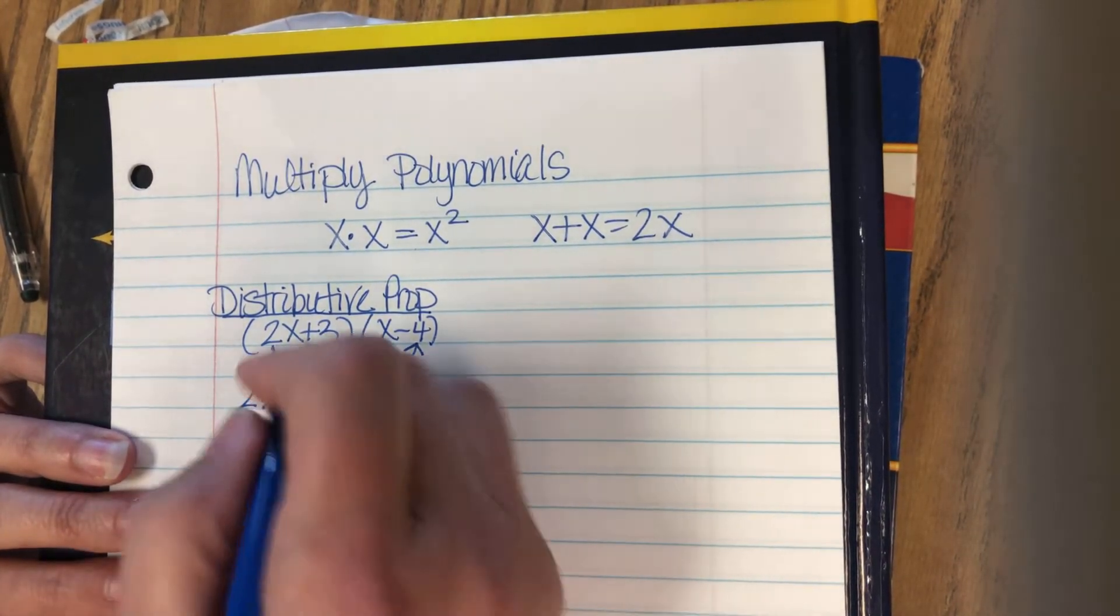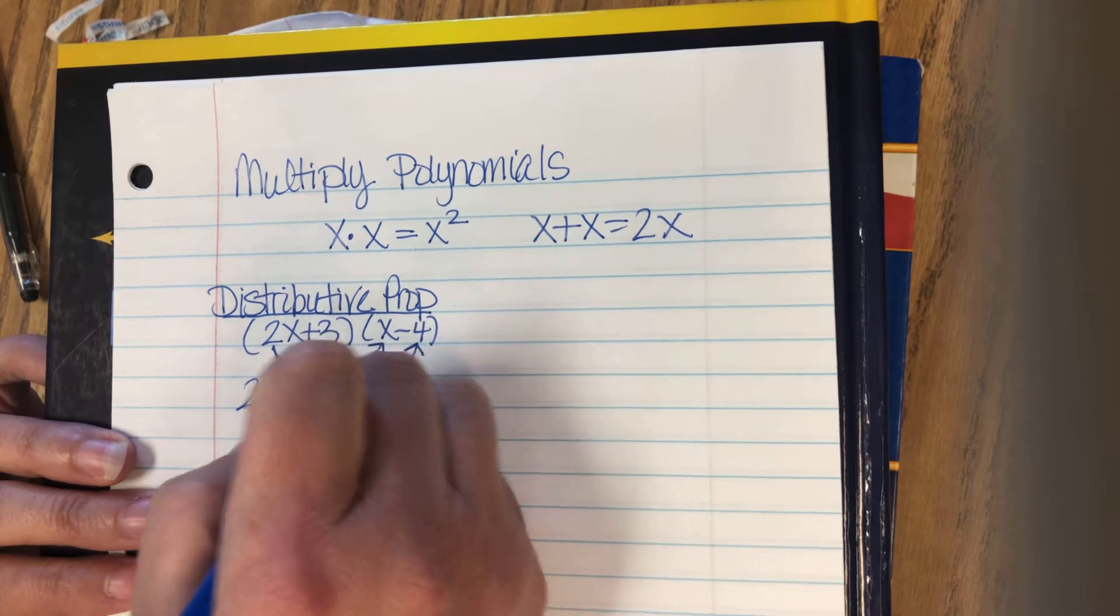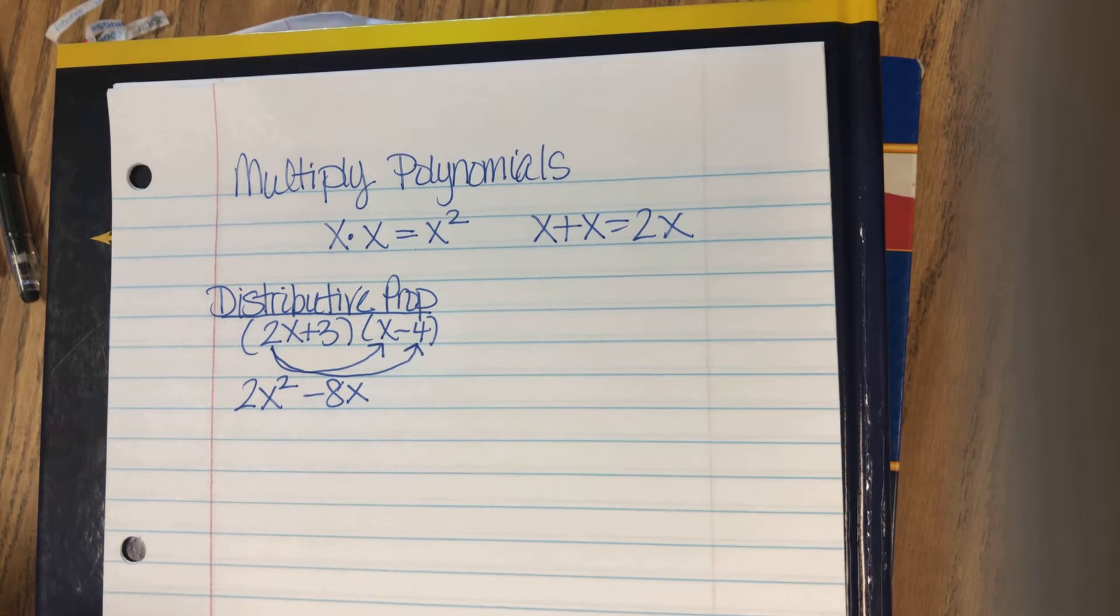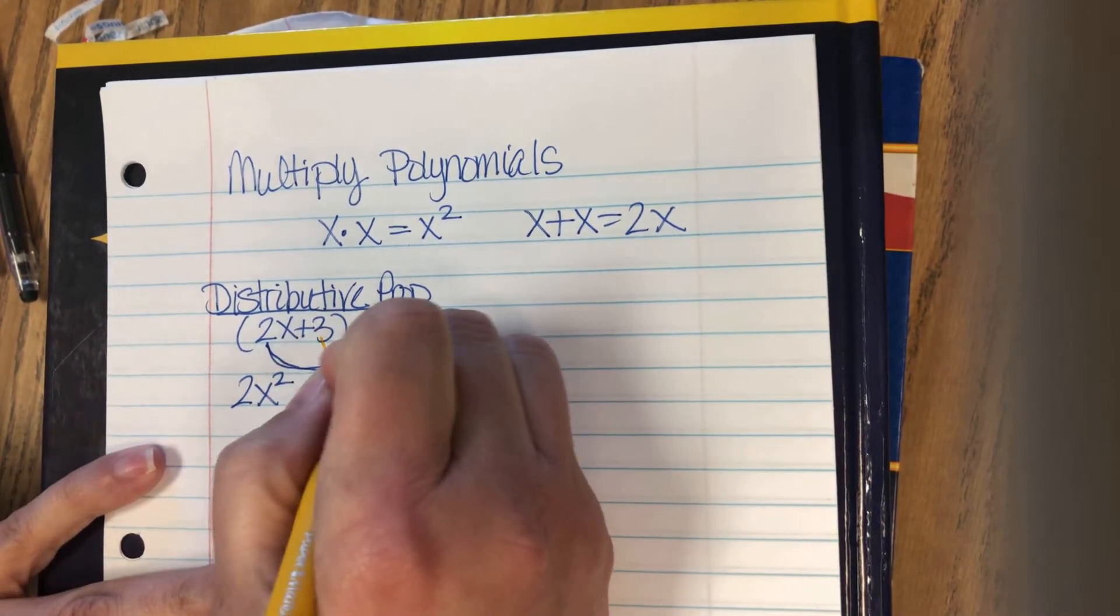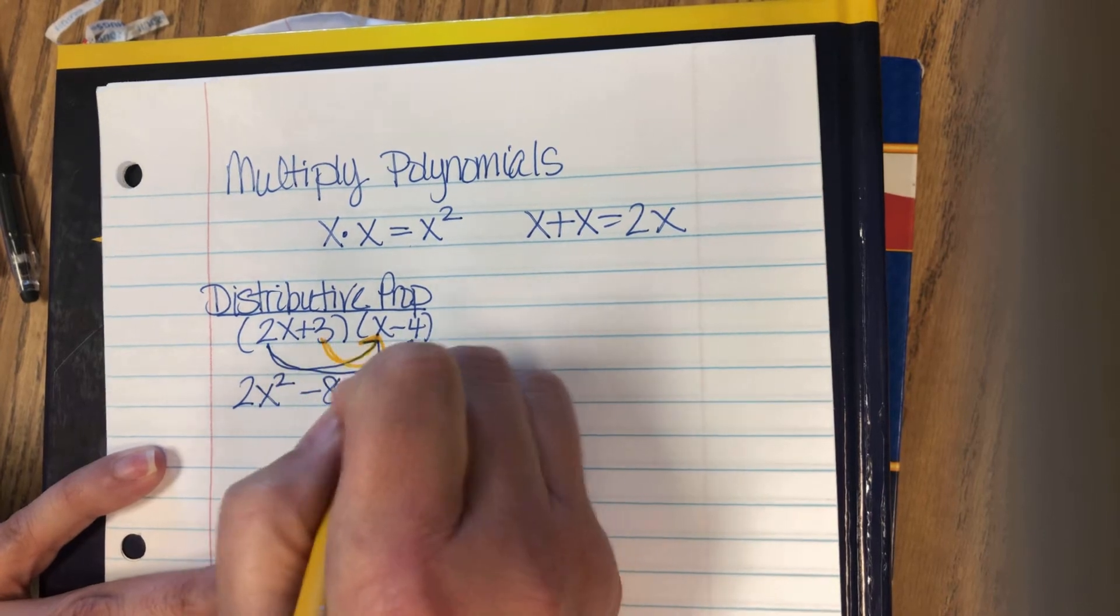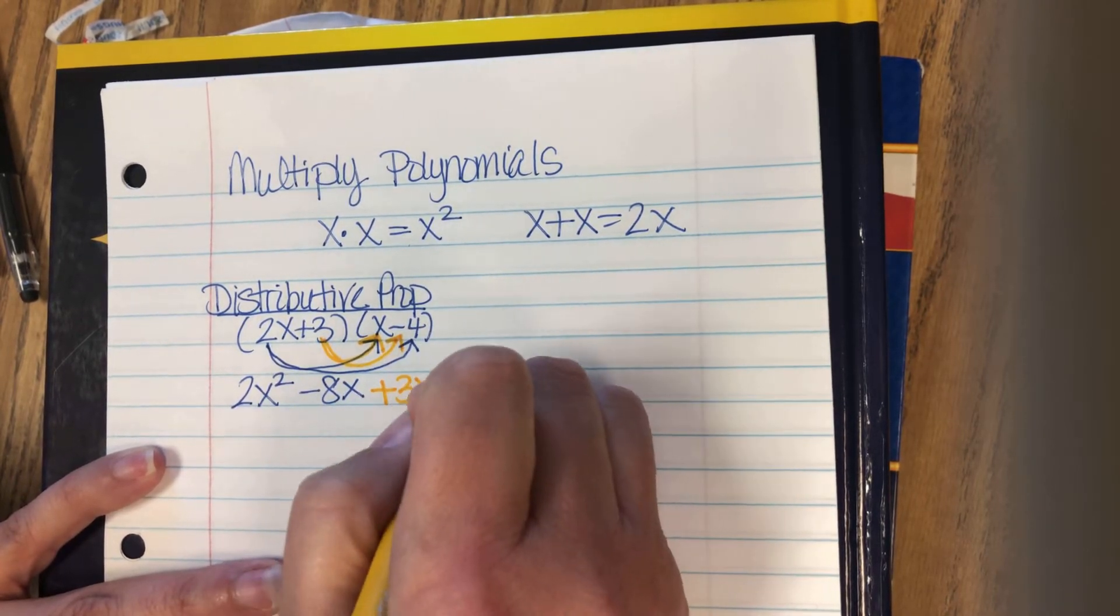2x times negative 4 is negative 8x. Then we take the 3 and we distribute it. 3 times x is 3x, and 3 times negative 4 is negative 12.